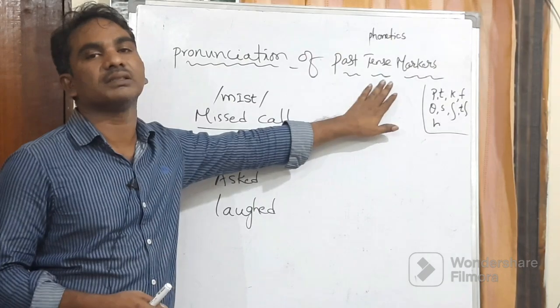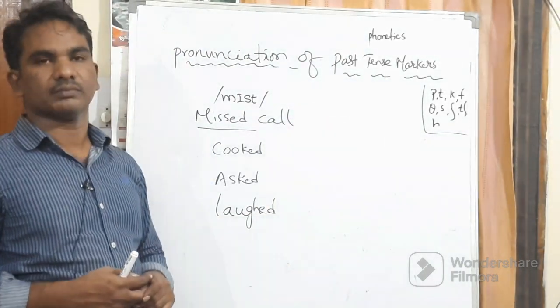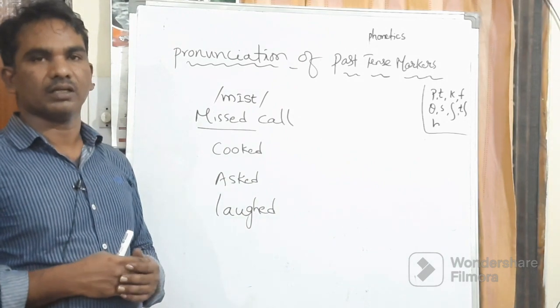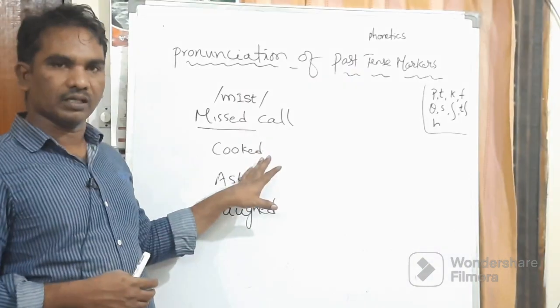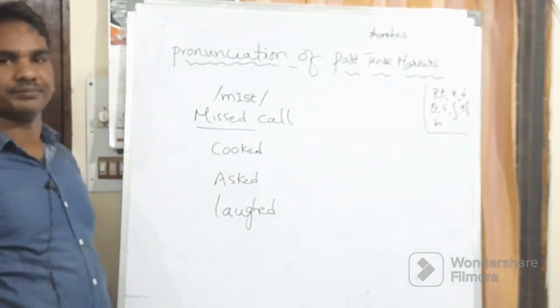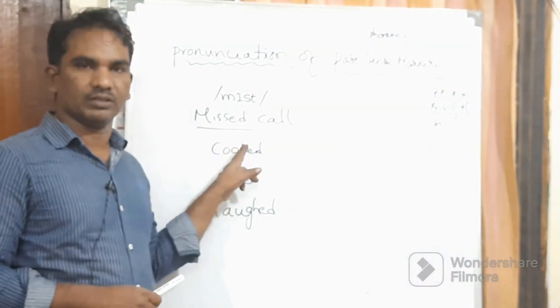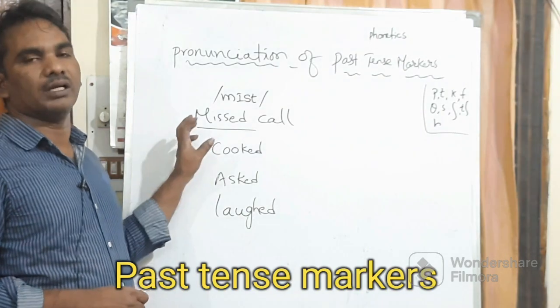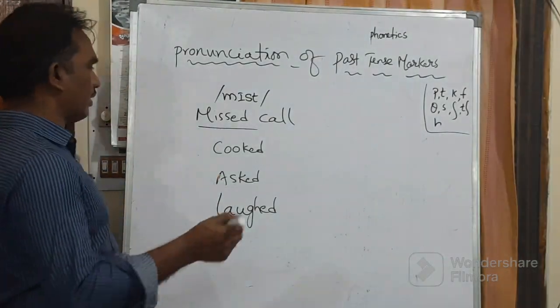Why do people say 'misudukalu,' 'kukkudu,' 'asked,' 'laughed' incorrectly? The reason is they don't know the pronunciation of the past tense marker. You may ask me: what is the past tense marker? People don't know the past tense marker and they don't know its pronunciation, so they mispronounce these words. You're supposed to say 'missed call.'